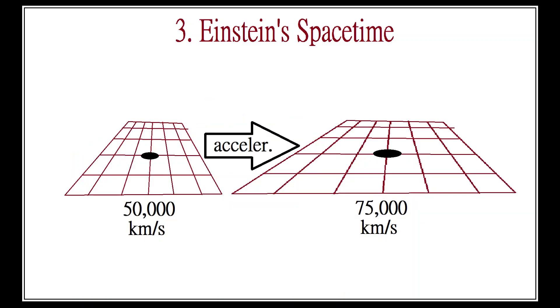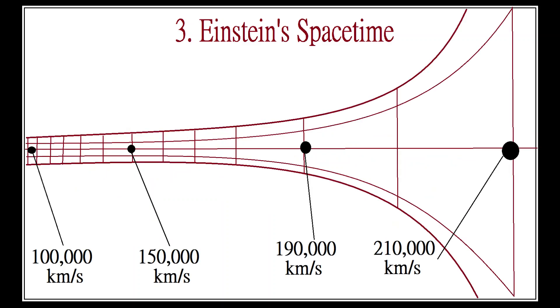Rather, space and time warp and change around the observer to accommodate the constancy of light speed. It's not that the speed of light increases to compensate for my speed. Rather, space and time warp around me in such a way to prevent me from ever reaching light speed.